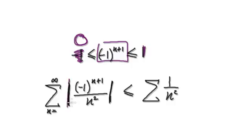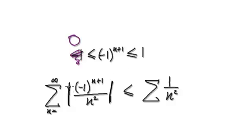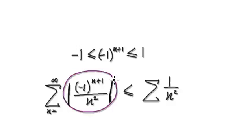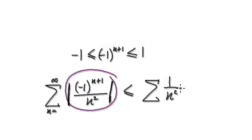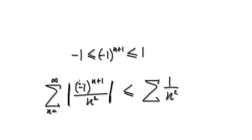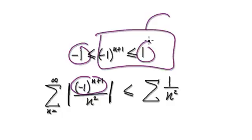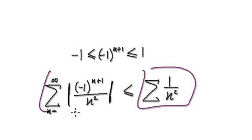When you take the absolute value, you don't care about the negative. By right, this thing is between negative 1 and 1, but when you take the absolute value you can think of it as being between 0 and 1. So rather than looking at this complicated expression, we know for sure that this absolute value term will be less than or equal to 1. Therefore, we can compare: the series without the alternating part will always be bigger than or equal to the series with the absolute value term.